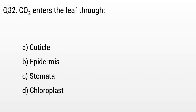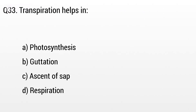Question 32. CO2 enters the leaf through: Option A: Cuticle, B: Epidermis, C: Stomata, D: Chloroplast. The right answer is option C, Stomata.